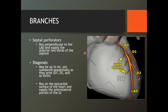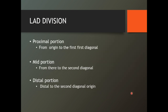This is how the LAD looks. What are the branches? Septal perforators — you can see them coming from the medial side, running perpendicular to the LAD, supplying the anterior two-thirds of the septum. And diagonals, which come from the lateral side — they could be from one to six in number, numbered D1, D2, D3. They run on the epicardial surface of the heart and supply the anterolateral portion of the left ventricle. LAD is again divided into proximal, mid, and distal. Proximal is from the origin to the first diagonal; mid is from the first to second diagonal; distal is beyond the second diagonal.